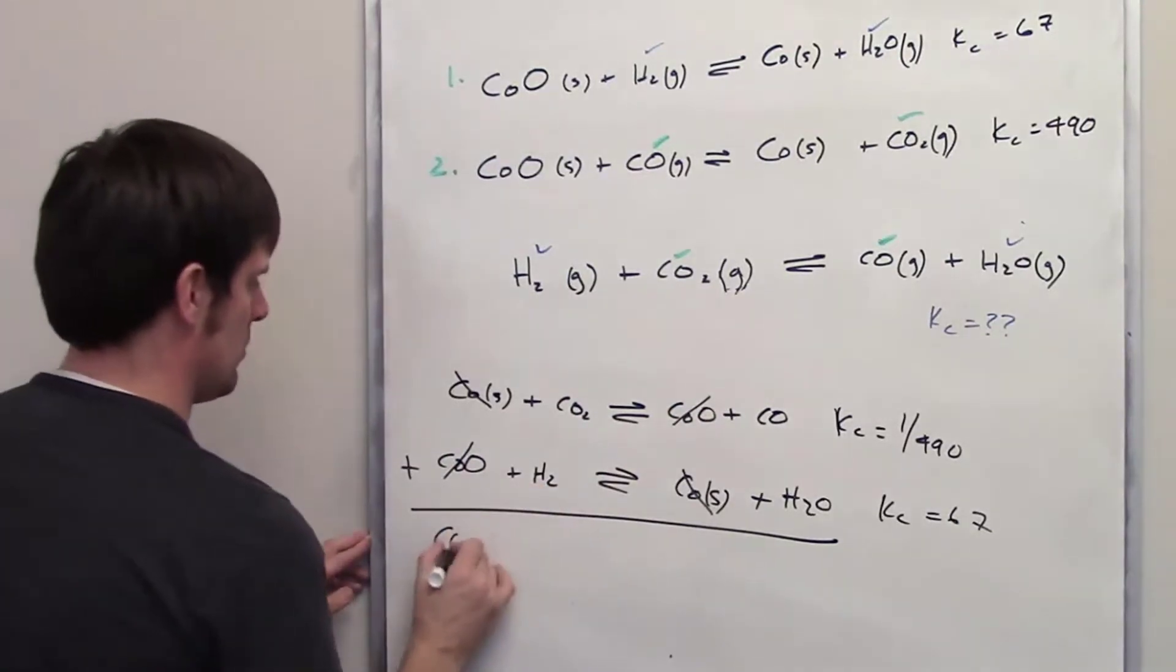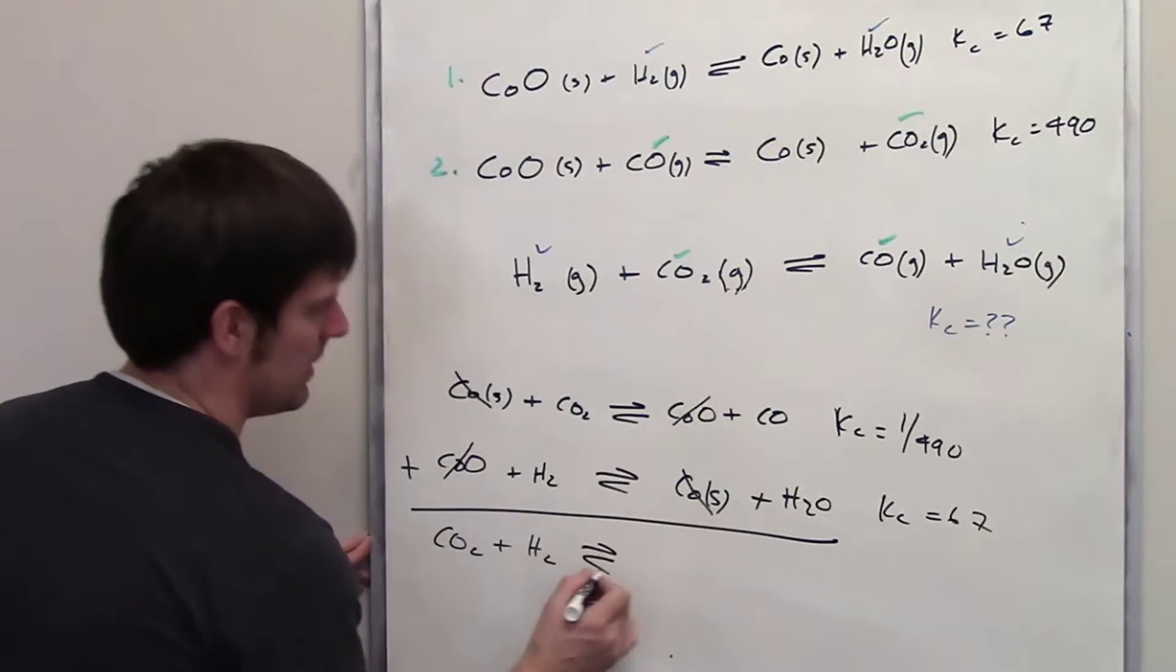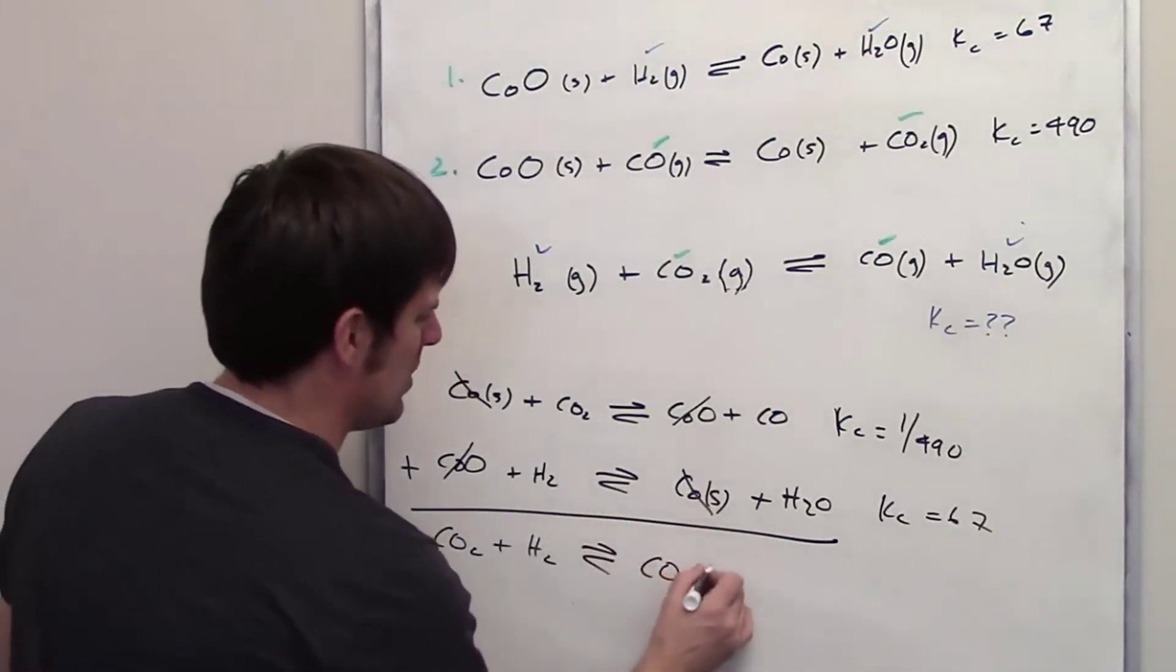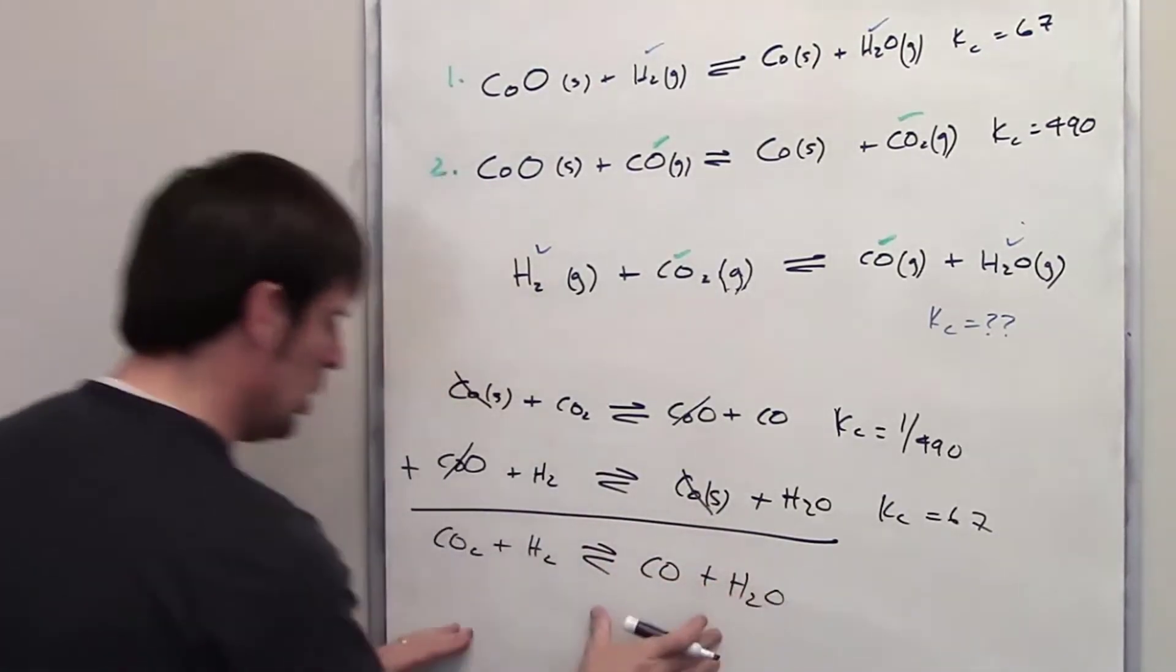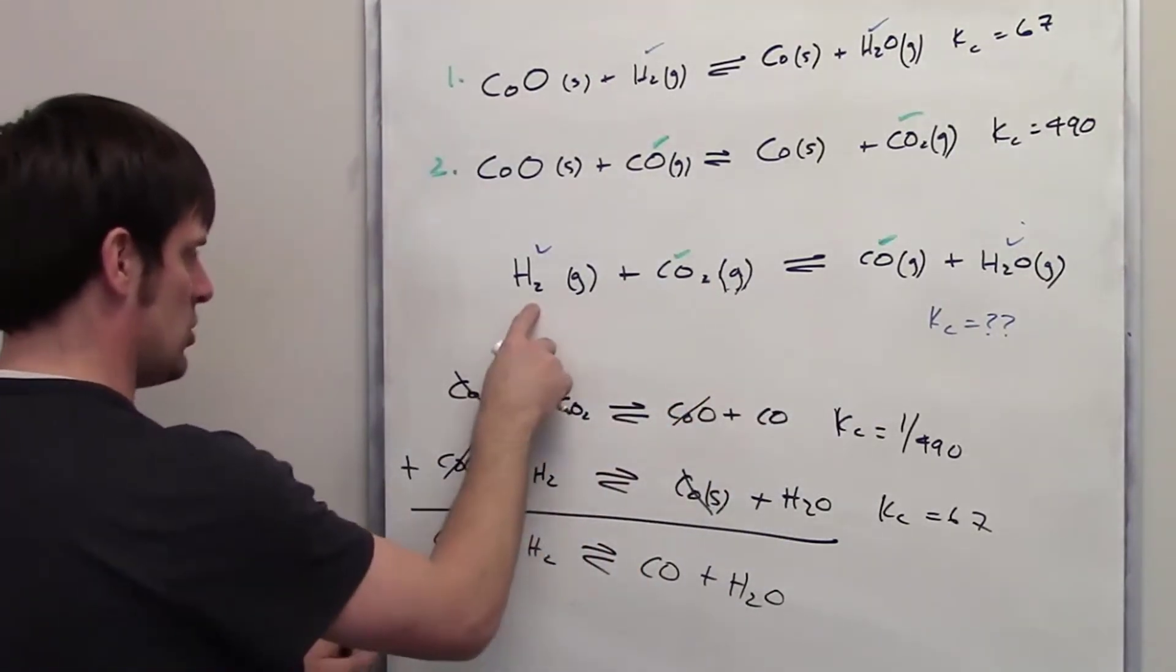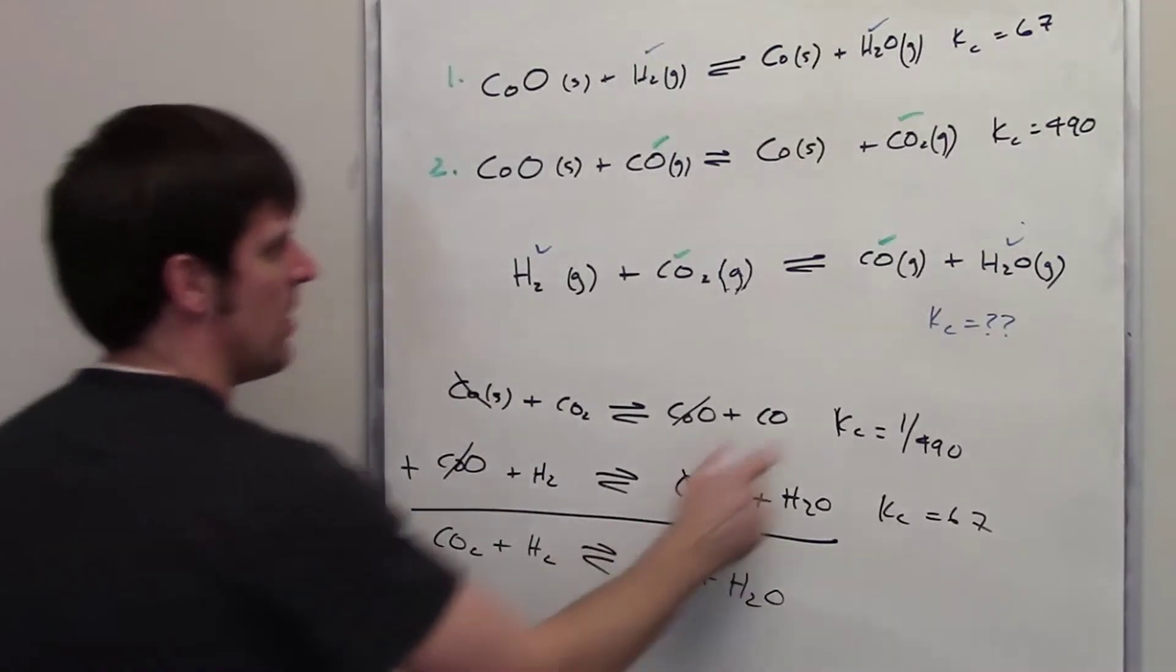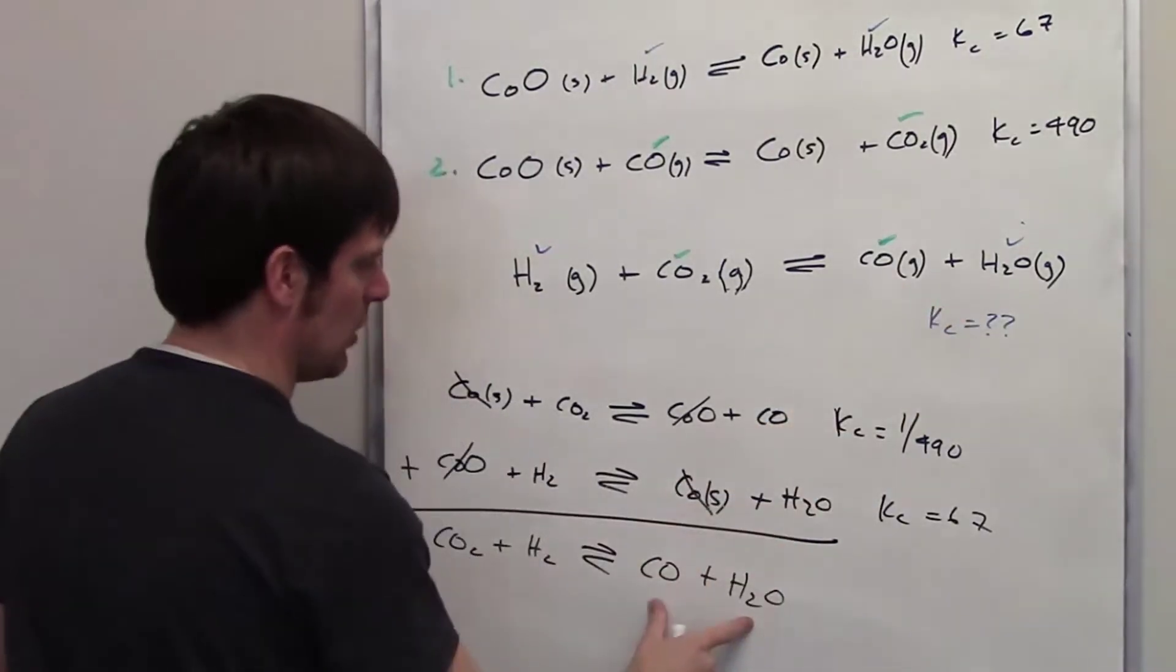Now I'll bring everything down. I've got CO2 plus H2 gas in equilibrium with CO and H2O. Does that look like the target equation I'm trying to get to? Yeah, I think it does. I've got H2 and CO2 on the left side. I've got those both right here. On the right side, I've got CO and H2O. I totally have that there.